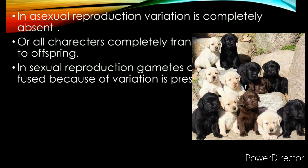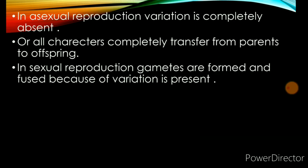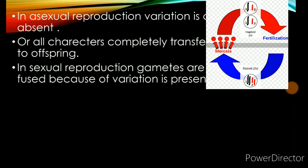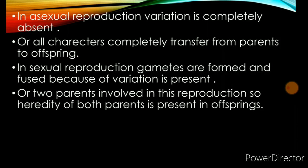In the offspring, the characters of both living organisms are visible. Because of this, you can see variation — the new living organism is not completely like either parent. The gametes fuse, and gametes are haploid cells produced from diploid cells by meiotic cell division. In meiosis, recombination takes place, so the new organism is not completely like either parent.